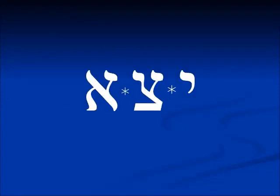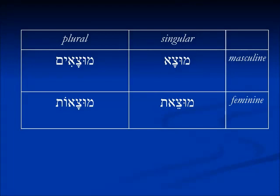When we have a verb that begins in yud coming into the huf'al, we lose the yud altogether — this is true for any drop-letter imperfect. So yatza, yatzeh in the pa'al means 'to go out'; l'hotzi we discovered in hif'il means 'to bring out.' And this form — mutsa — means 'they are brought out,' or singular 'she is brought out.' Again, the feminine: since it ends in aleph, we see the tzere under the tzadi and the tav. Mutsa'im, mutsa'ot — no yud.